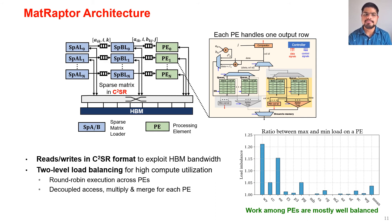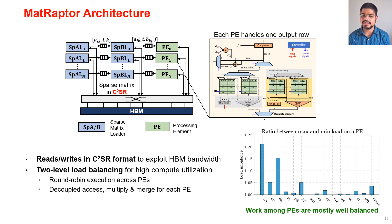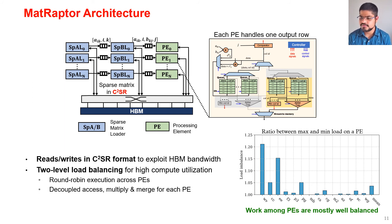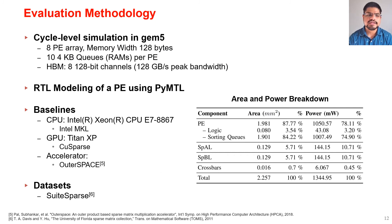Using the row-wise product approach and the C²SR sparse storage format, we implement the MatRaptor architecture, which consists of sparse A and B loaders and the PEs. The sparse A and B loaders read matrices A and B in C²SR format, and the PEs perform the MAC operations and store results back to memory. MatRaptor implements two levels of load balancing for high compute utilization: round-robin execution across PEs (enabled by C²SR's round-robin channel allocation), and decoupled memory and compute phases — the multiply and merge phases operate in a decoupled manner.